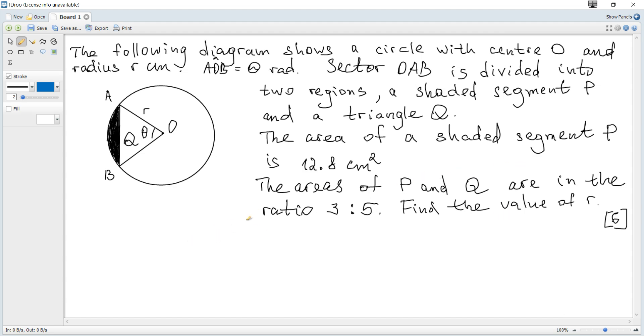So since the area of P is given, we can find the area of triangle Q. It's just 5/3 times greater. Or the area of P is three parts and if you divide 12.8 by 3, you get per one part and you need five parts because the area of Q is five parts, you then multiply by five. And it becomes 64 over three.